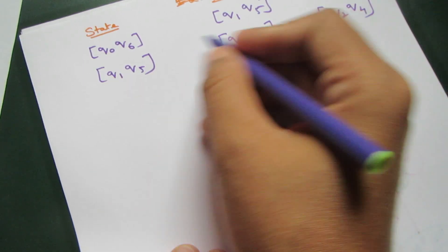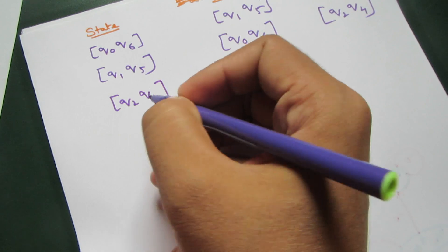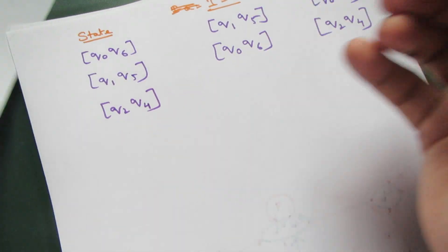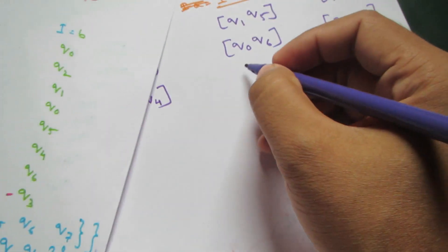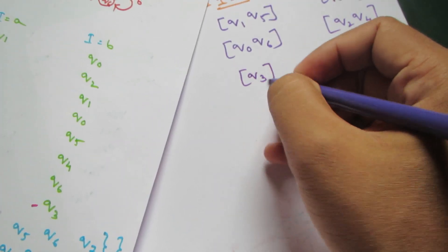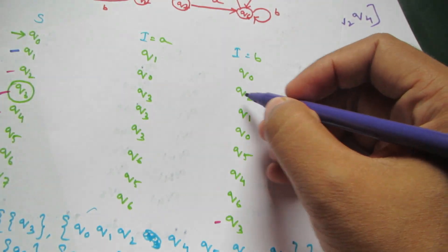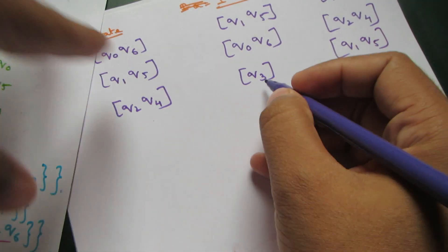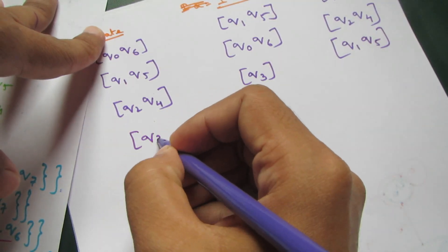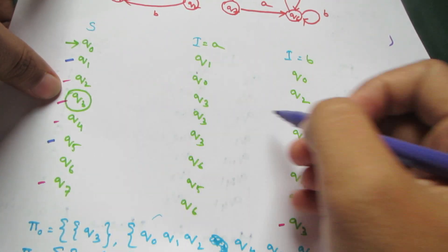This row is done. Now bringing in q2 q4. Looking at the diagram, q2 and q4 on input a go to q3, and on input b, they go to q1 — so q1 q5.